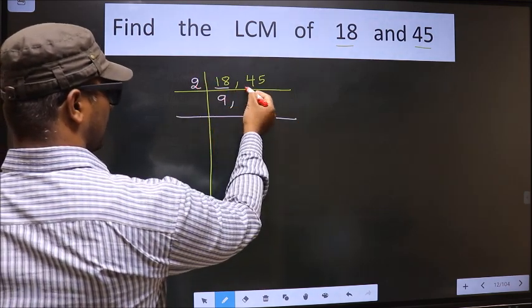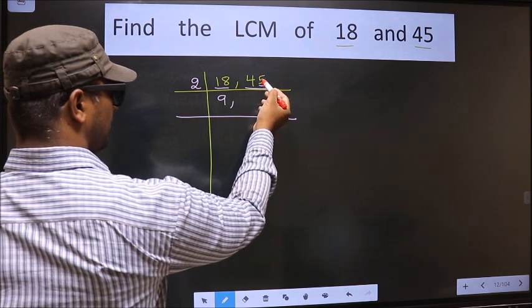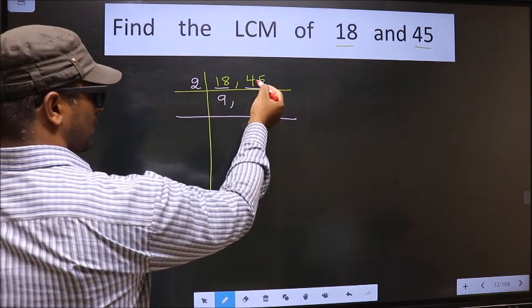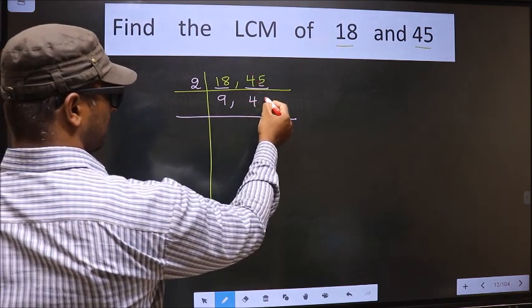Now the other number 45. Here last digit 5 is not even, so this number is not divisible by 2. So you will write down 45 as it is.